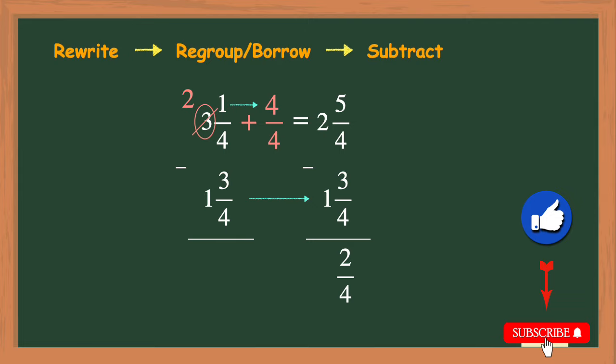Next I will subtract the whole numbers 2 minus 1 is 1 which gives us our answer or our difference of 1 and 2 fourths.